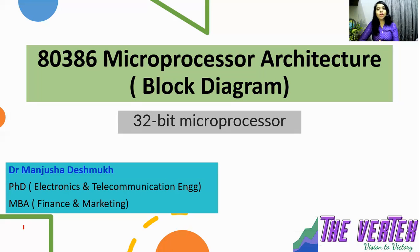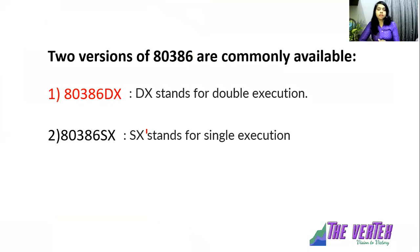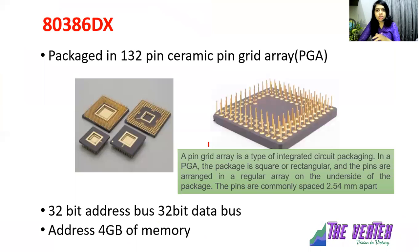Hello everyone. In this video I am going to explain 80386 microprocessor architecture. Let's learn the block diagram of 80386. The 80386 is a 32-bit microprocessor. There are two versions: the 80386-DX and 80386-SX. DX stands for double execution and SX stands for single execution. In our discussion, we are going to learn about the 80386-DX, that is called double execution.